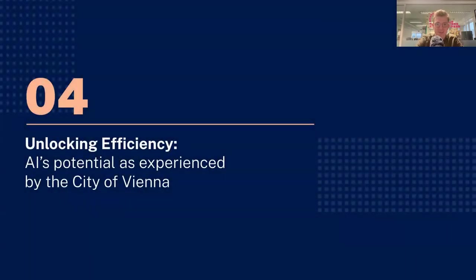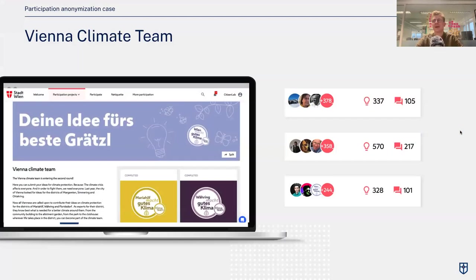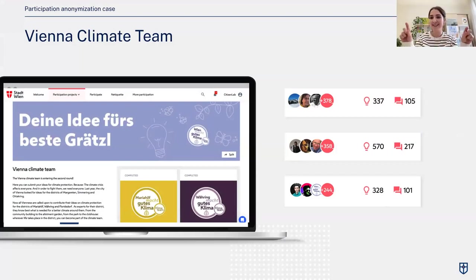Now we'll talk with Marlena about how she has used the tool. Marlena, working at the city of Vienna, has been one of the leaders in citizen participation there and has worked with us developing the tool, providing early feedback, and pioneering its use. I want to start by asking: in the world before AI, how were you typically doing the reporting and analysis of your community engagement projects? Marlena noted she wanted to take part in the poll but as a host she was not allowed.